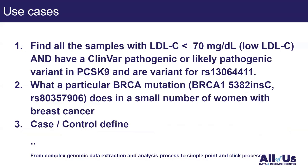Here are some use cases for the new feature. The first: find all samples with low LDL cholesterol — less than 70 — and who have a ClinVar pathogenic or likely pathogenic variant in the PCSK9 gene, or a variant for a specific RSID SNP. Previously, you'd need to extract genotypes from the whole dataset for that genomic region and SNP, determine the number of alternative alleles, then combine with LDL results to define your cohort. This was a complex process.